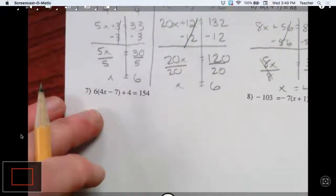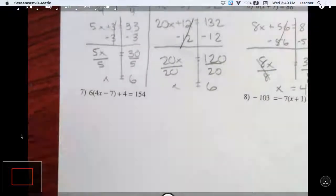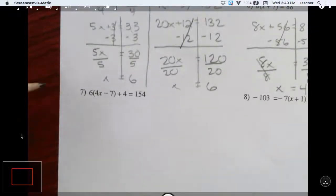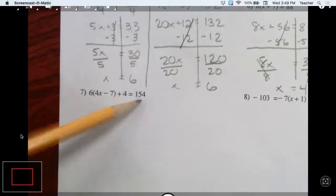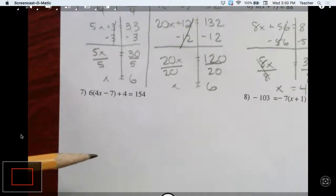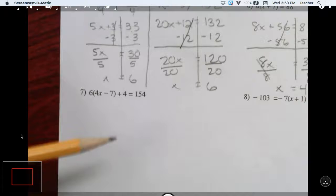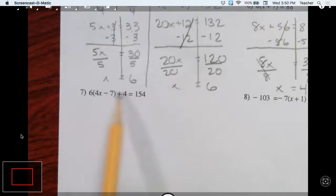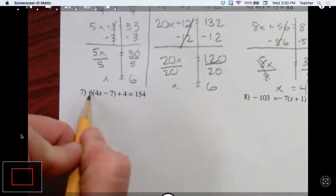All right. Now these get a little trickier here. Again, there's a lot of different ways that you can solve this. I could subtract 4 from both sides right away, and then the problem becomes like 5 and 6. Or I could go ahead and simplify this side first.